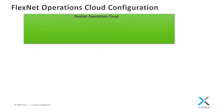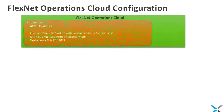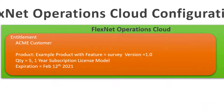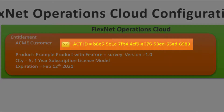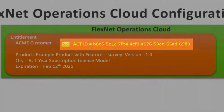As a refresher, in the previous video I covered the FlexNet Operations Cloud Configuration required to run the licensing examples. An entitlement was created for the Acme customer account for an example product that contained one licensed feature called Survey version 1.0. The account was entitled to a quantity of five licenses with a one-year subscription license model. In this example, the license expiration is February 12, 2021. An Activation ID was automatically generated that will be used in the license activation process.